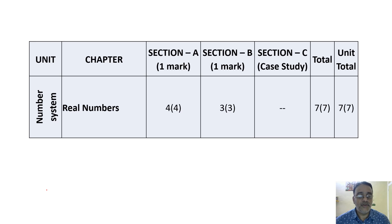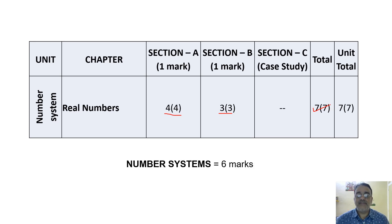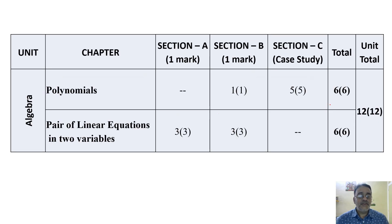The first chapter is Real Numbers (Unit: Number System). Section A has four questions and Section B has three questions — seven questions and seven marks total. But the unit weightage as per the Term 1 split-up syllabus is only six marks. Since it's optional, you can attempt all seven questions from Real Numbers.